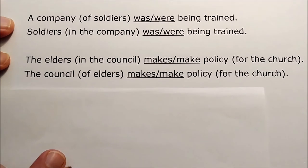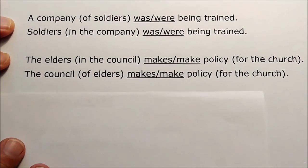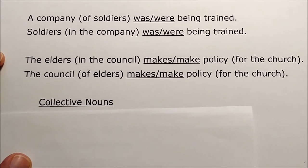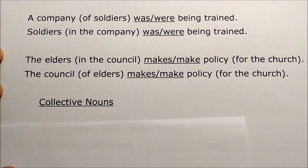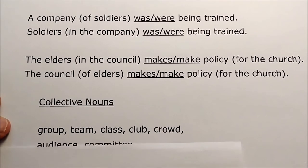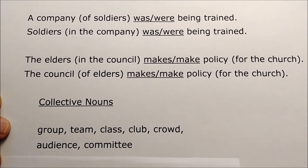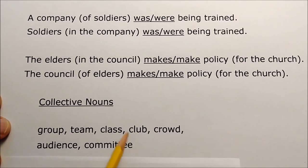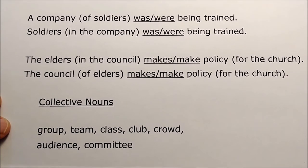What causes us to make mistakes with these sentences is that some nouns are collective — they represent a group of things and even though they seem like many, each word itself is actually singular. Examples: group, team, class, club, crowd, audience, committee. Even though they're made up of many members, each word itself is singular — a group of something, a team of something. So these are all singular nouns, and as subjects they are singular. They're called collective nouns.